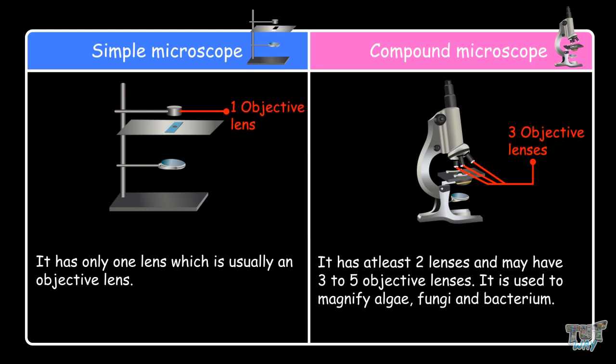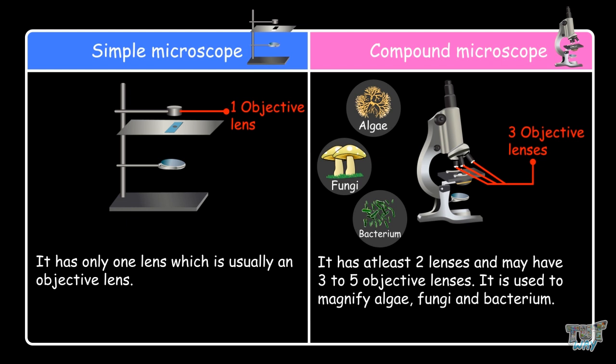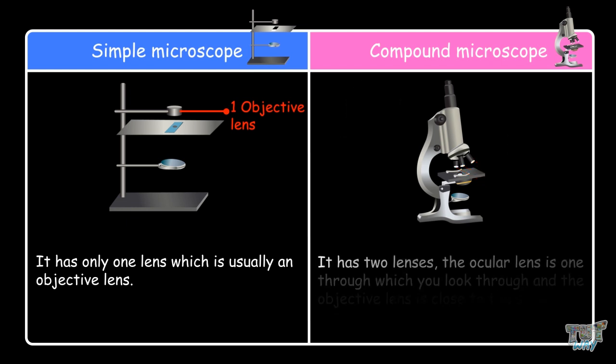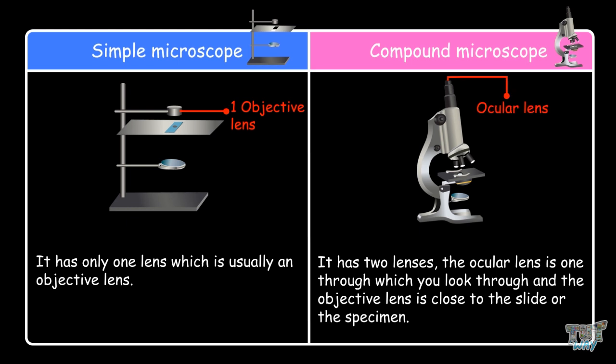The compound microscope is used to magnify algae, fungi and bacteria. As we know it has two lenses. The ocular lens is the one through which you look through and the objective lens is close to the slide or the specimen.